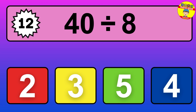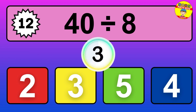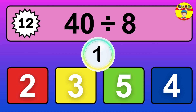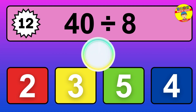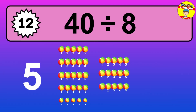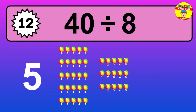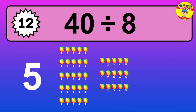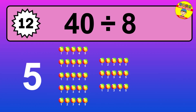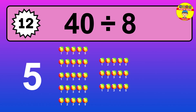40 divided by 8 — it's time to think. Let's go to the solution. Divide the number 40 by 8. Each group contains 8 units, so dividing 40 by 8 results in 5 equal groups. Thus, the result is 40 divided by 8 equals 5.